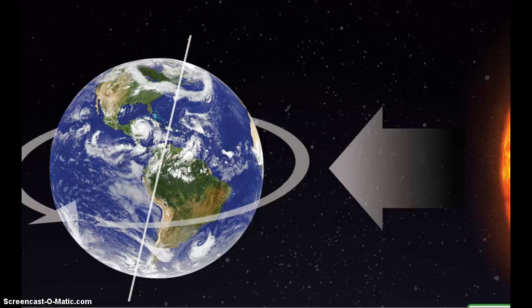As Earth rotates, light from the sun falls on one half of the Earth — we call this daytime. The other half of the Earth is in darkness and we call this nighttime. As the Earth continues to rotate, the part of the Earth that has sunlight moves into the darkness and the part of the Earth that has darkness moves into the sunlight. This is a never ending cycle of daytime to nighttime.